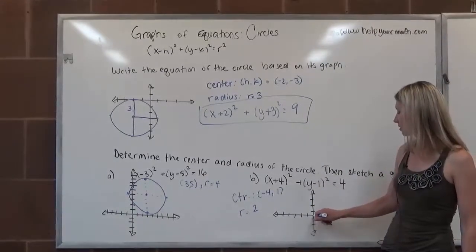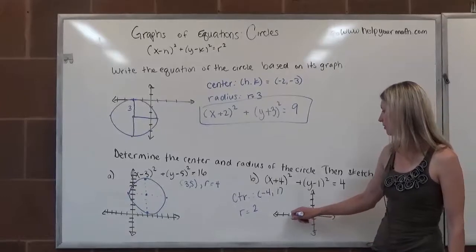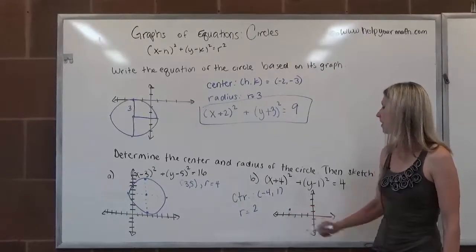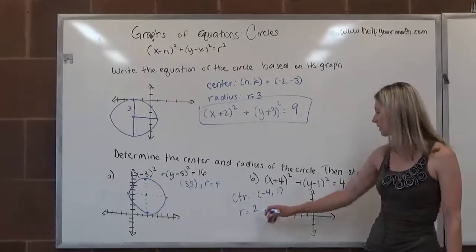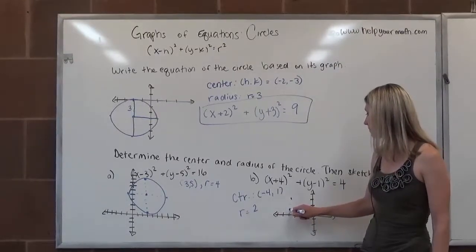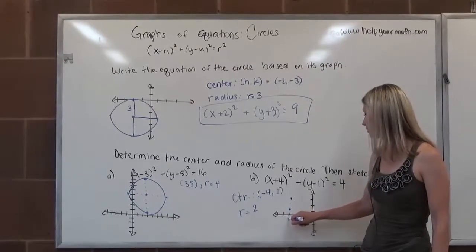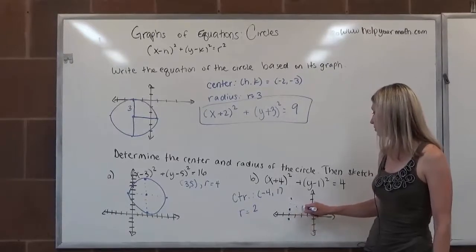So on our graph, we're going to start with the center, 1, 2, 3, 4, up 1. And then again, to sketch a quick graph, we're going to take the radius. I'm going to go up 2 units. I'm going to go back to the center, go down 2 units. Go back to the center, go to the right 2 units.